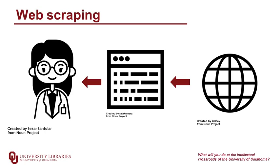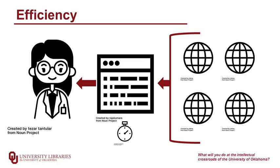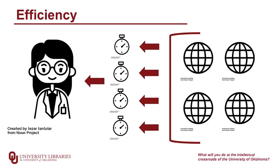Web scraping is where you use programming scripts to pull content directly from websites. You can then analyze the text and content that you download. It's orders of magnitude more efficient to scrape the data automatically than it is to manually look at each website or paper.